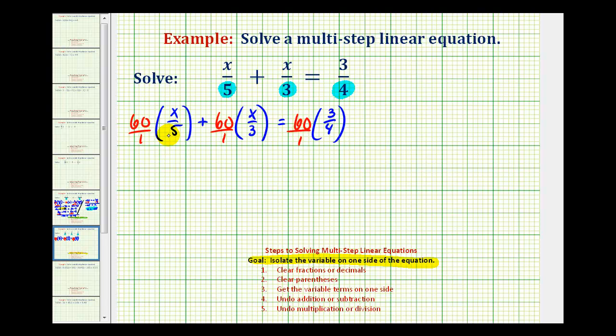Looking at this first product, notice that five and sixty share a common factor of five. There's one five in five and twelve fives in sixty. So the result here would be twelve x over one, or just twelve x.